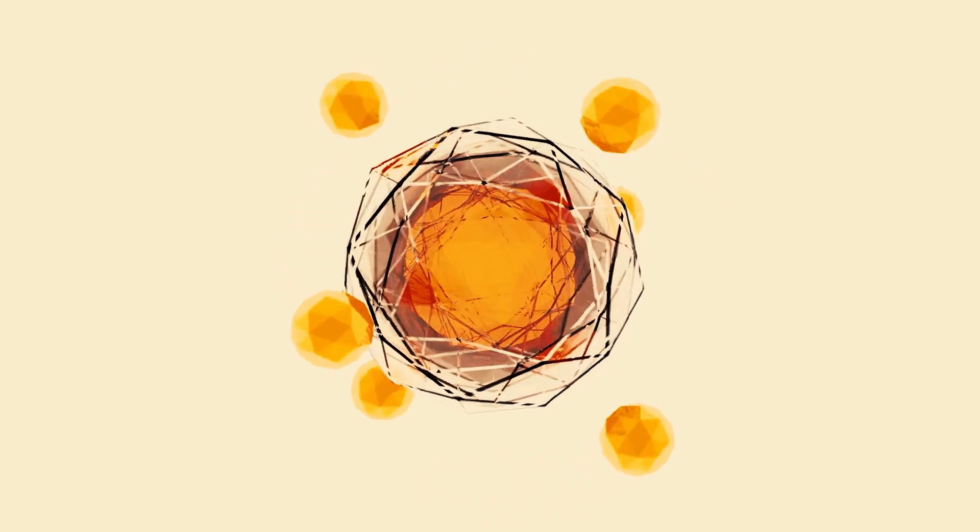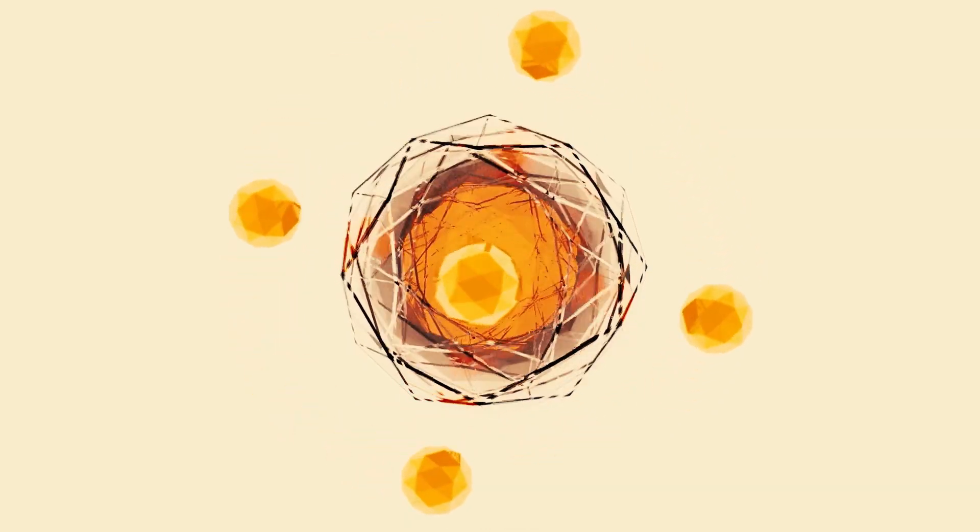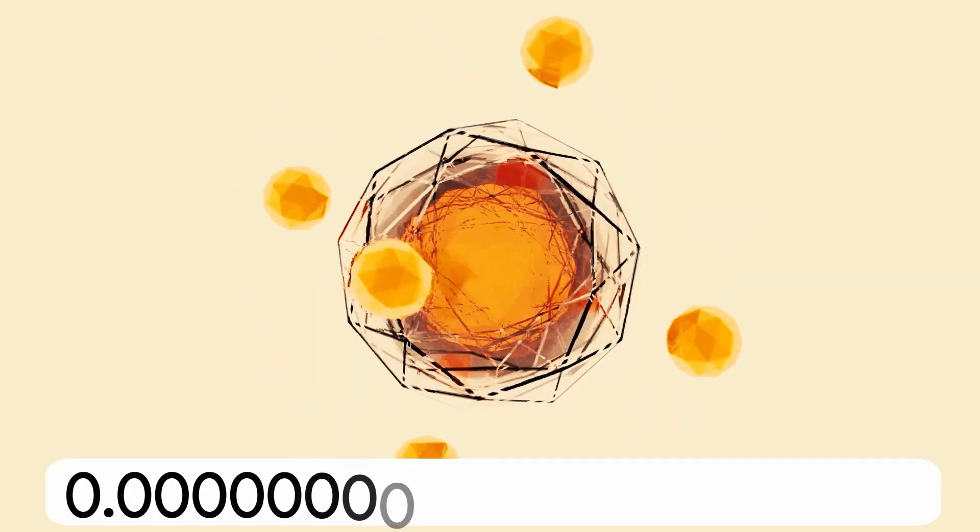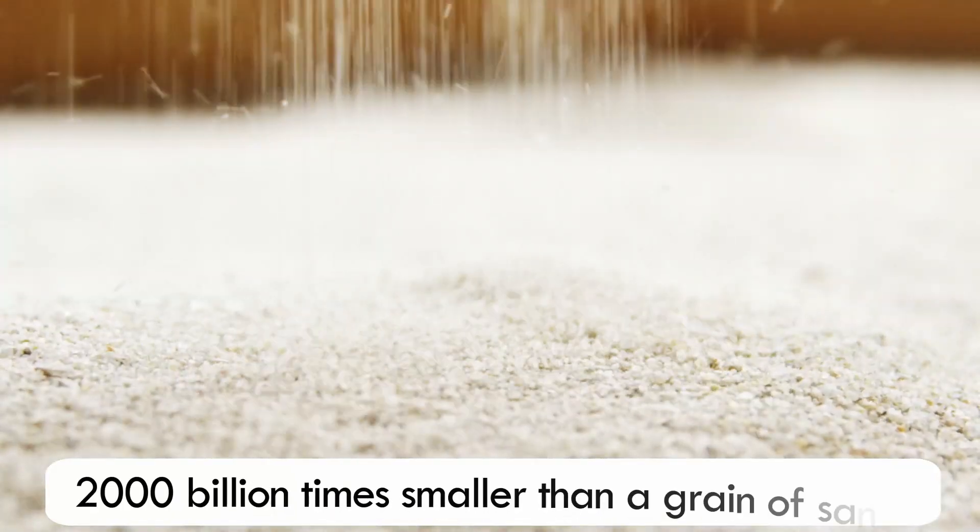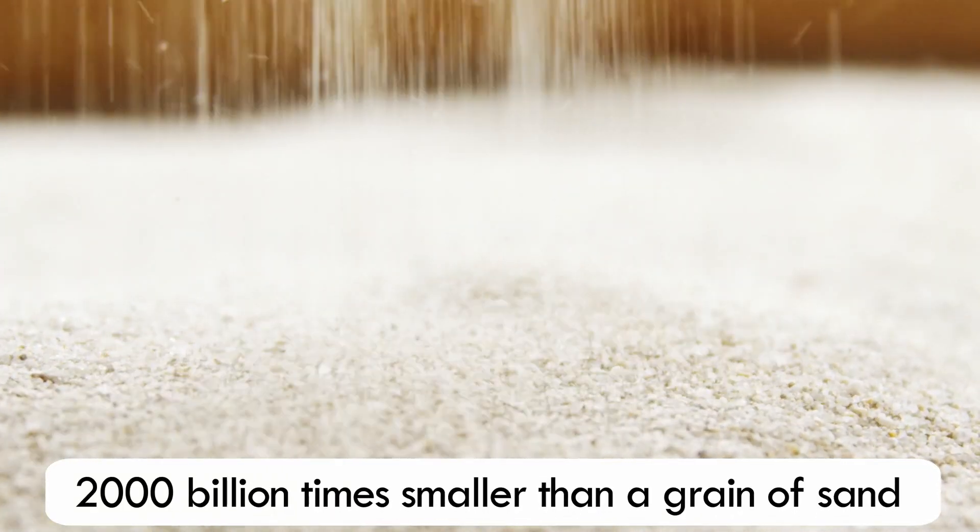An electron's average diameter turned out to be 0.00000000001 centimeters, or 2,000 billion times smaller than a grain of sand.